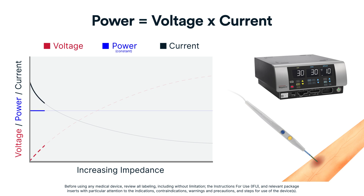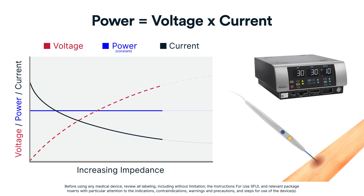In surgery, the generator, which delivers constant power, is set to a given power level. When the monopolar instrument encounters resistance in the tissue, the generator responds by increasing the voltage and decreasing the current.